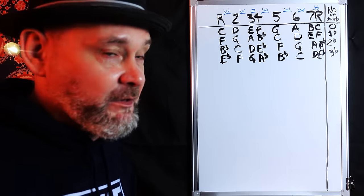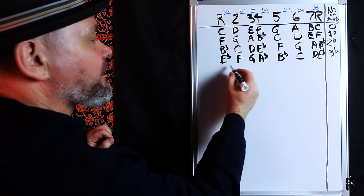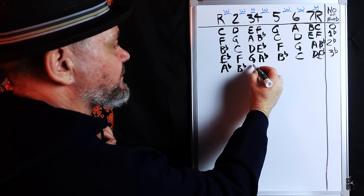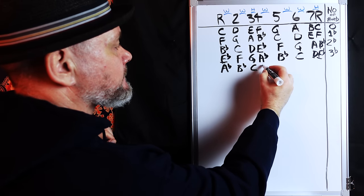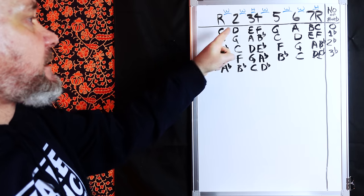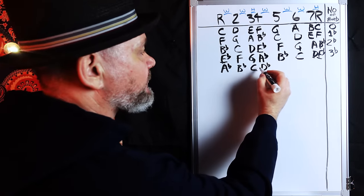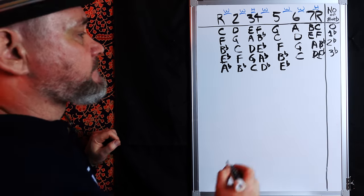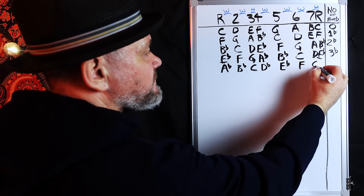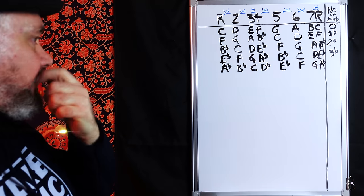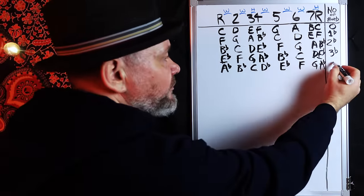How many flats do you think the next key is going to have? Let's find out — we'll go to the fourth note of the E flat scale: A flat, B flat, C, D flat. We have to bring that D closer because between C and D is a whole step and we need a half step. E flat, F, G, A flat. How many flats? One, two, three, four. If you guessed four, you were correct.